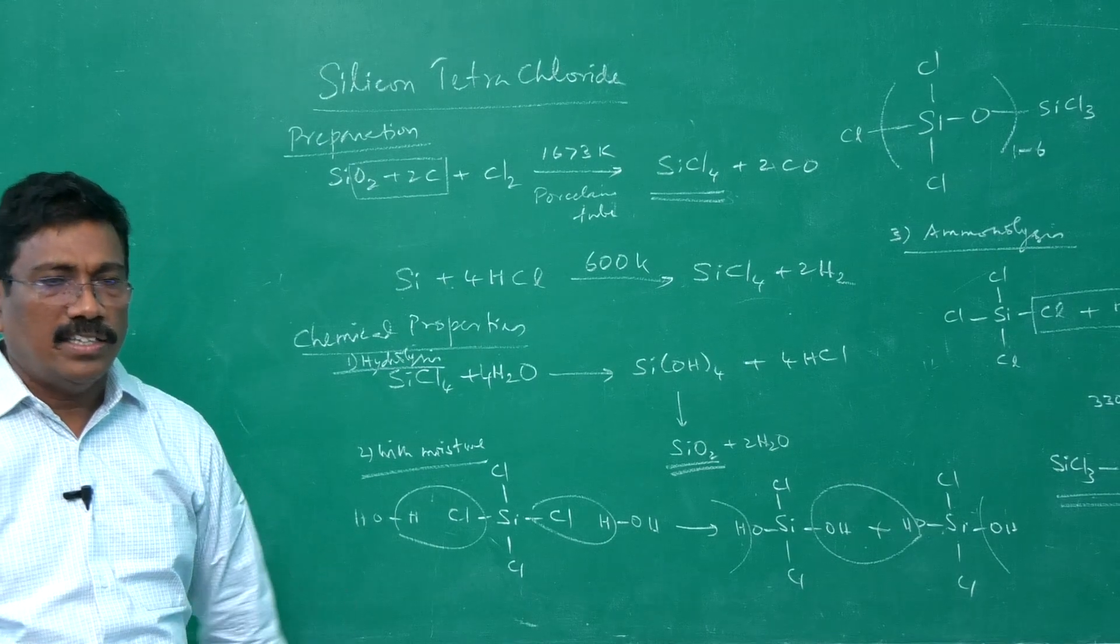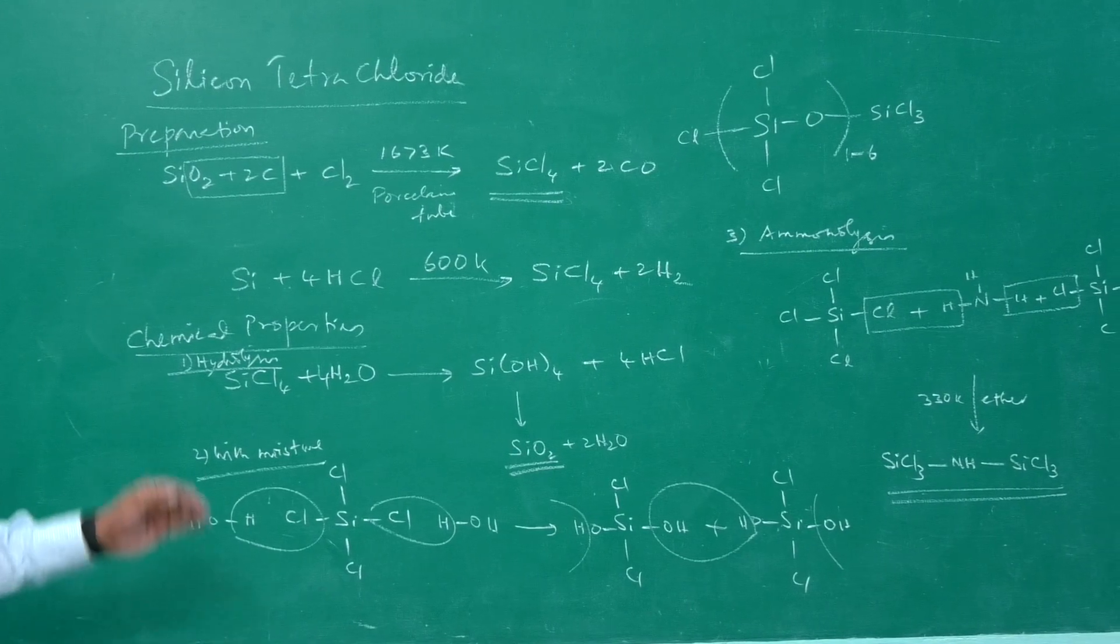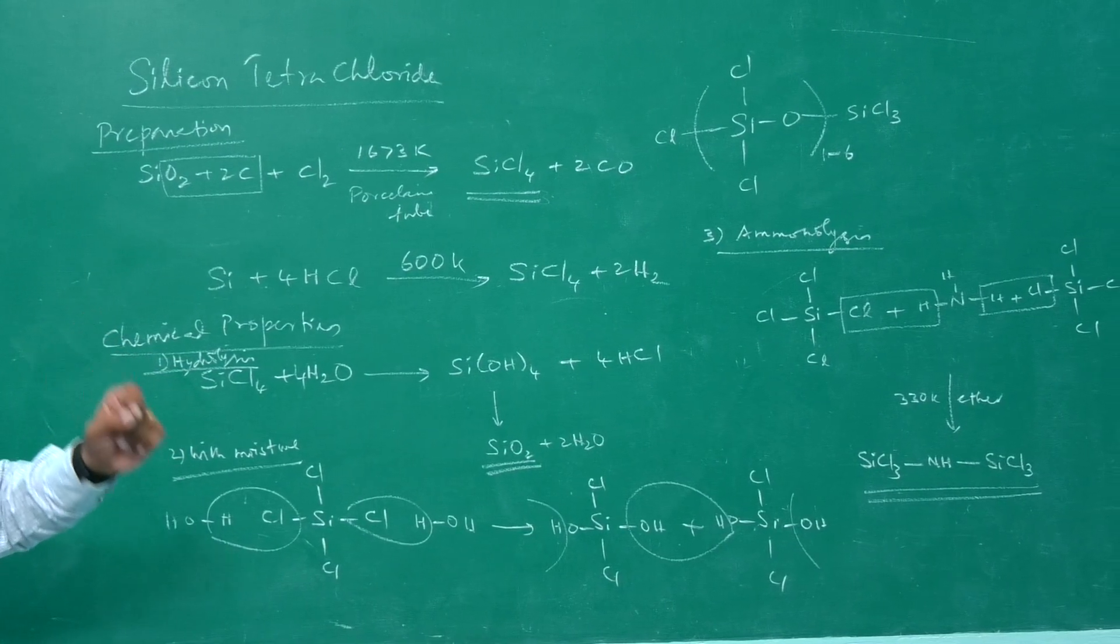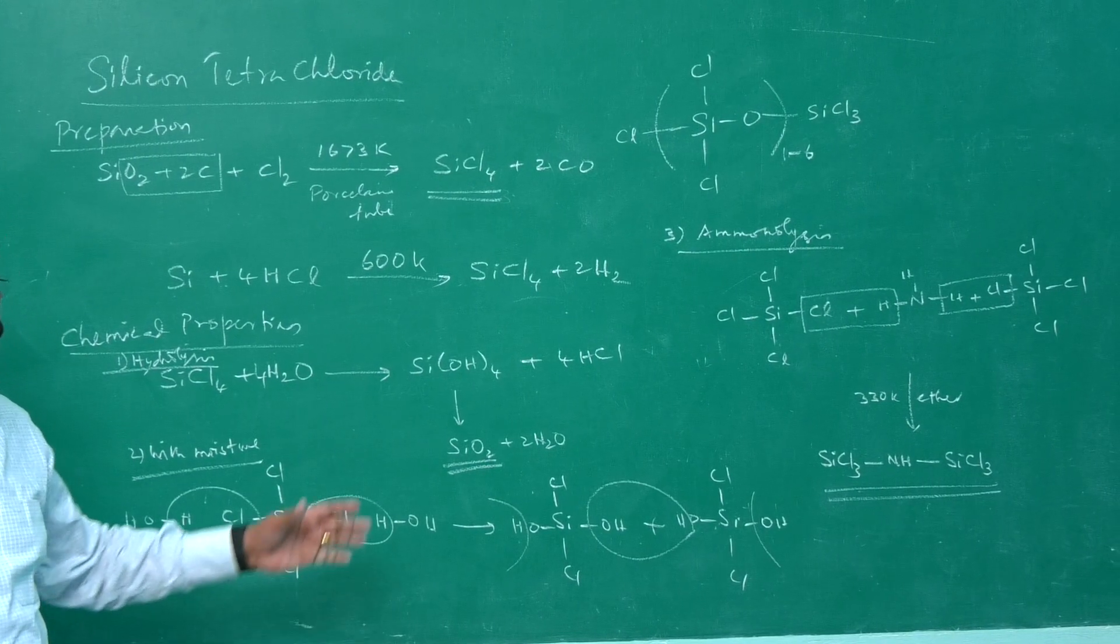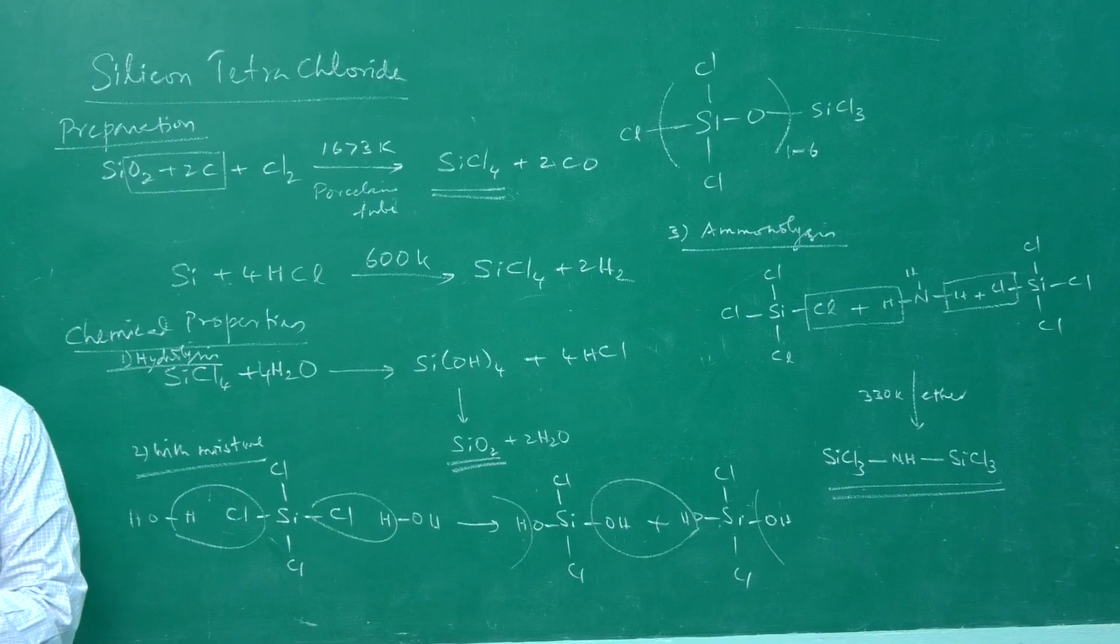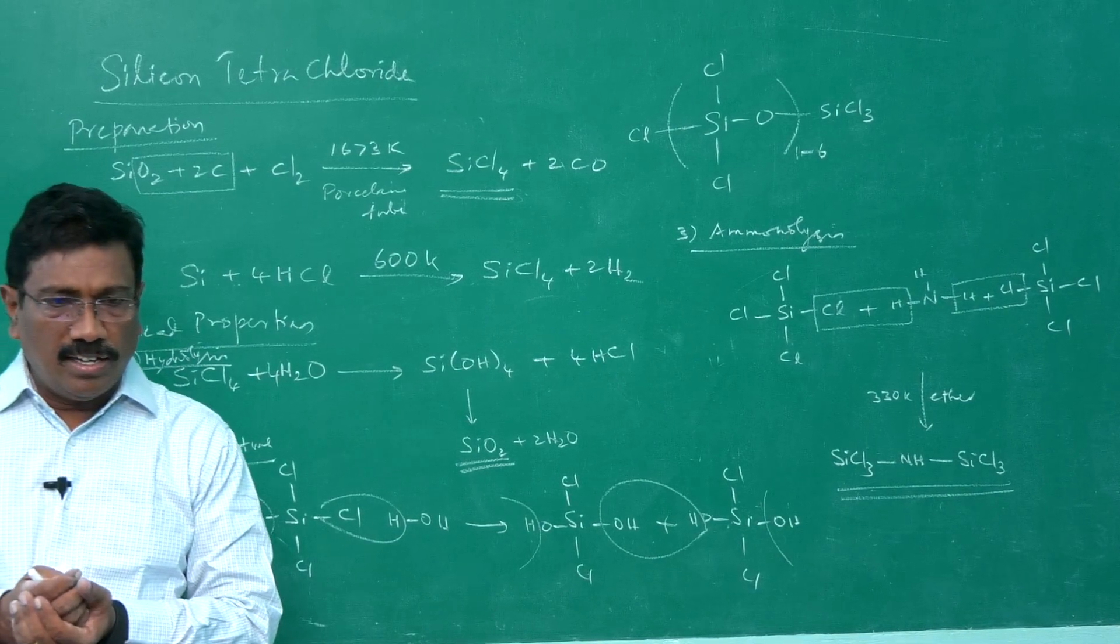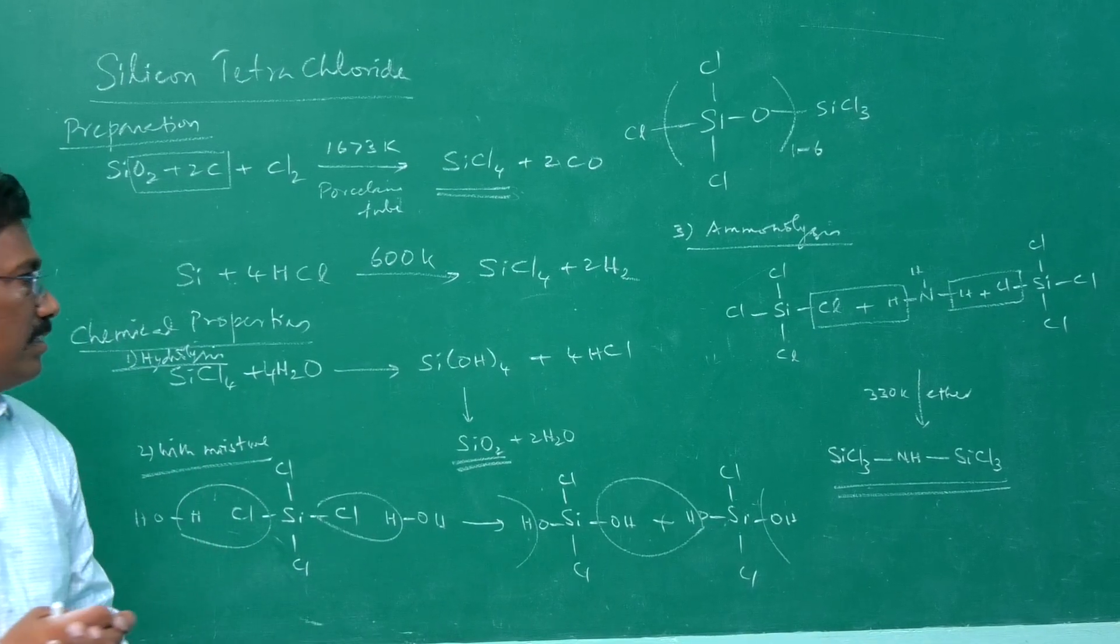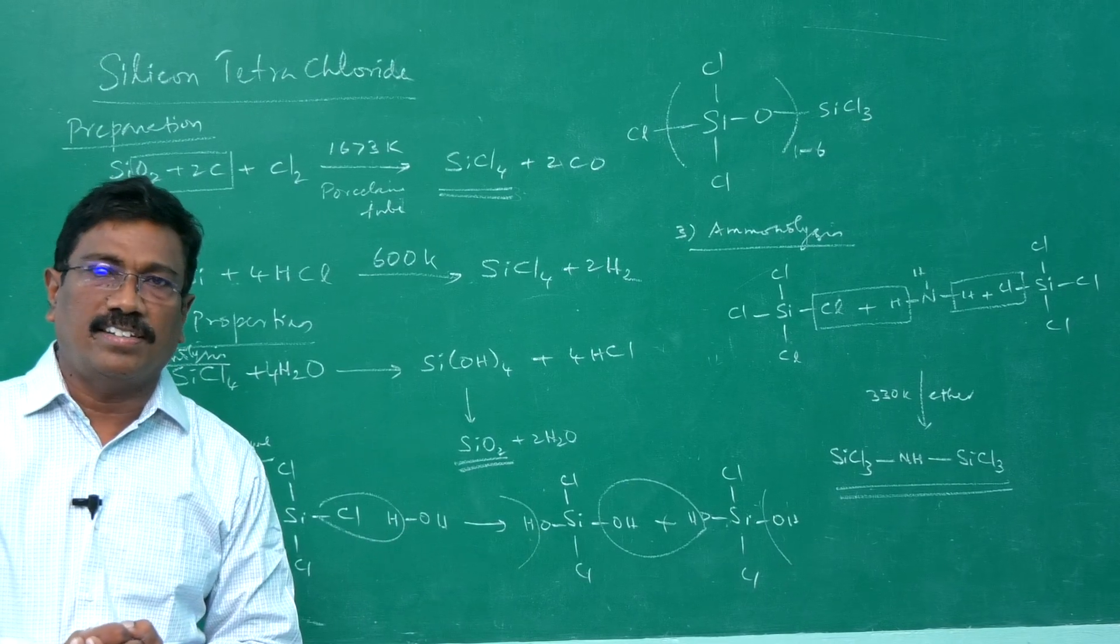What are the important applications? From SiCl4, semiconductor silicon can be prepared. It is also used in the preparation of silica gel, silicic ester, and binder for ceramic materials. These are all the applications of silicon tetrachloride. Thank you.